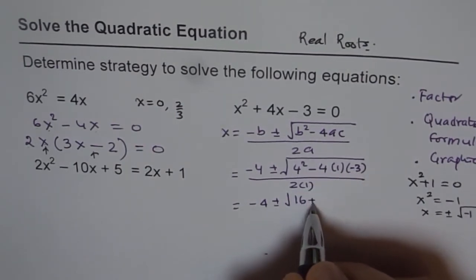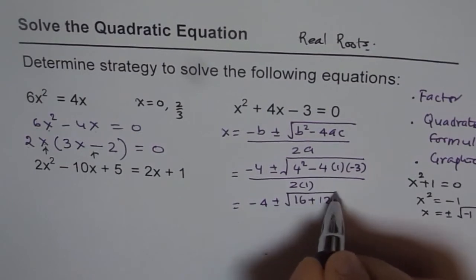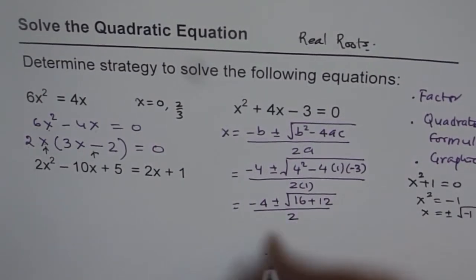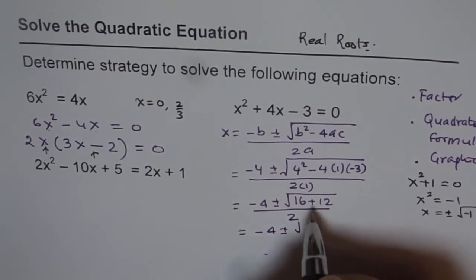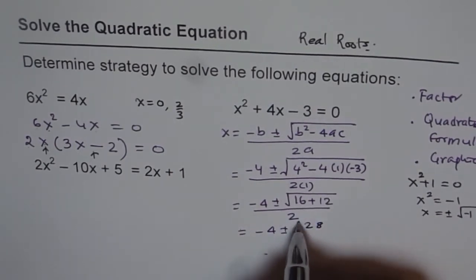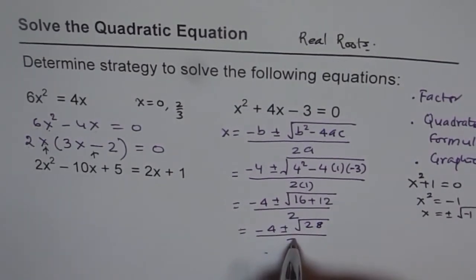minus times minus is plus. So we get +12 under the square root, divided by 2, and that gives us -4 ± √28 divided by 2.